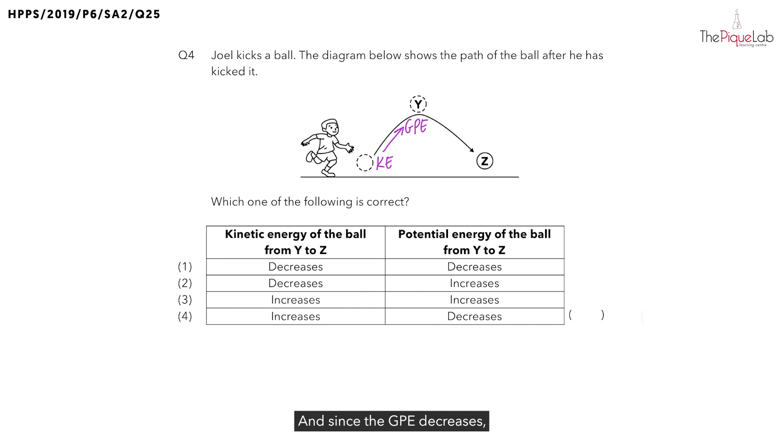And since the GPE decreases, what happened to the GPE? Can the gravitational potential energy just disappear? We know energy cannot be created or destroyed. The gravitational potential energy possessed by the ball must be converted to another type of energy.